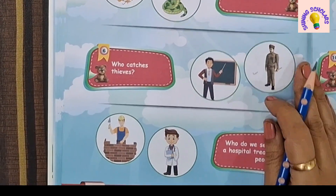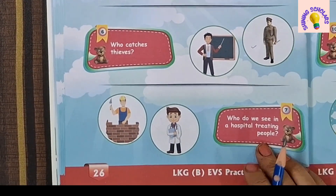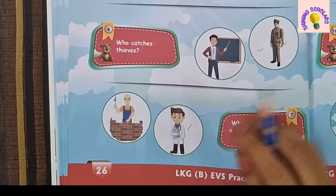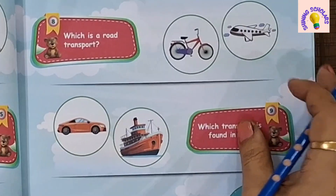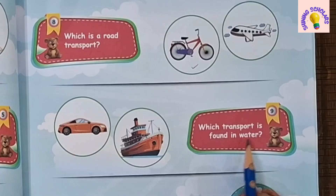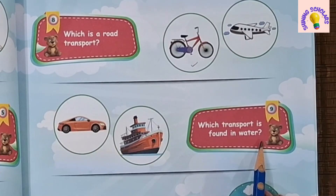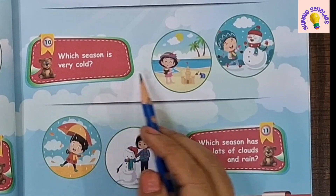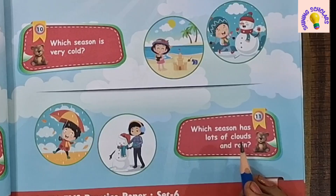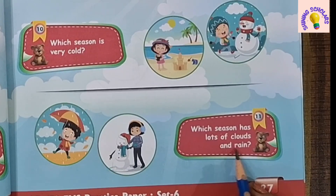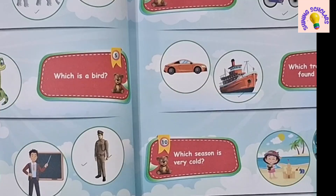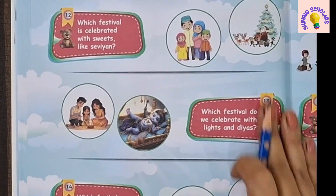Who catches thieves? Policeman catches thieves. Who do we see in a hospital treating people? Doctor. Which is a road transport? Bicycle is a road transport. Which transport is found in water? Ship. Which season is very cold? Winter season. Which season has lots of clouds and rain? Rainy season — the child is holding an umbrella.